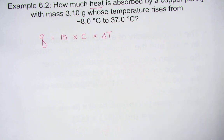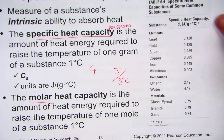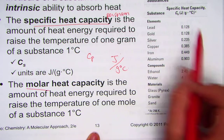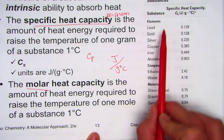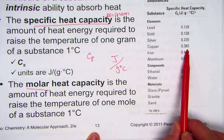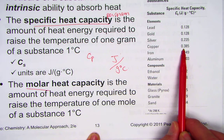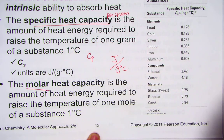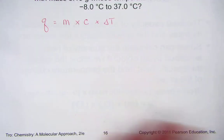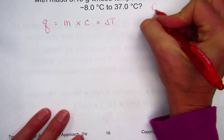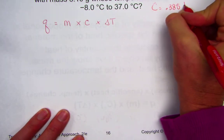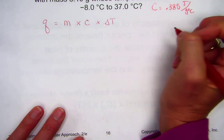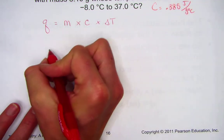We need the slide that gave us all the different values of specific heat to help us solve this problem. Going through the previous slides and pulling out that chart of all the specific heat constants — slide number 13 gives us that, or you could look it up in your textbook using table 6.4. Copper has a unique specific heat value: it is a constant 0.385 joules per gram degrees Celsius.